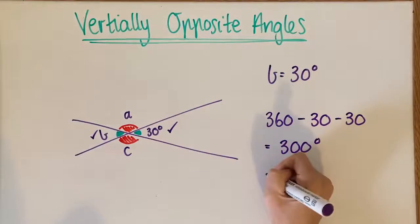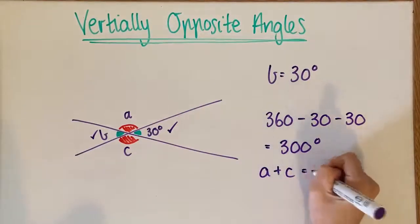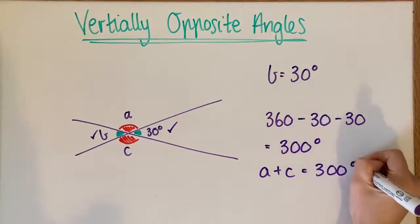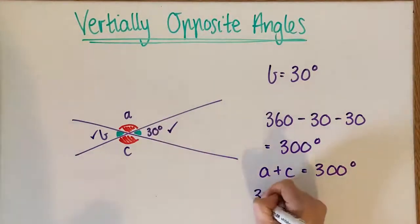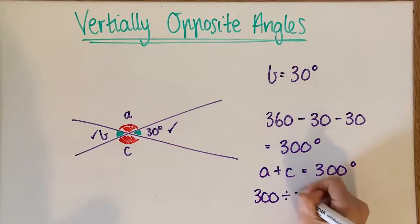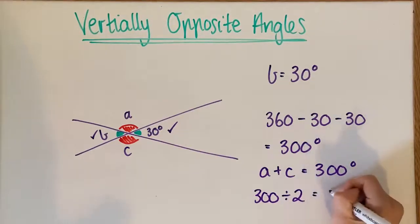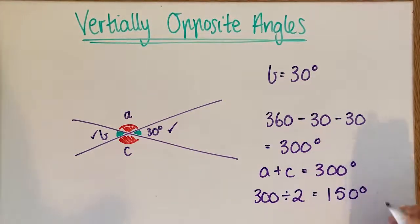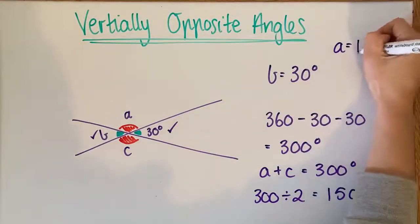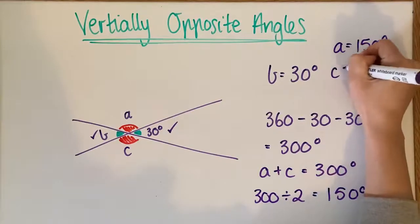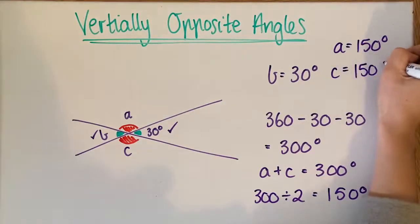Now, combined A and C together are going to make 300 degrees. And they've got to be the same size. So really, I just have to go 300 divided by 2 and that will give me 150 degrees. So I can say that A equals 150 degrees and C also equals 150 degrees.